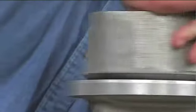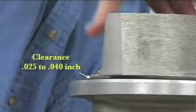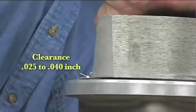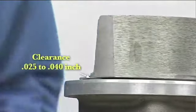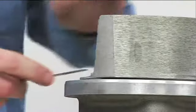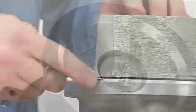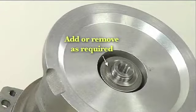A clearance of 25 thousandths to 40 thousandths inch between the impeller and the seal plate is recommended for maximum pump efficiency. Measure this clearance and add or remove impeller adjusting shims as required.